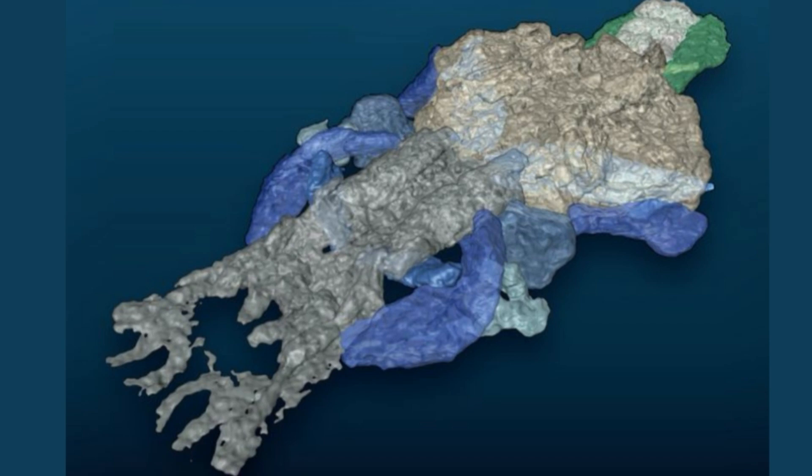Tetrapodomorphs usually have these features, and other animals contemporaneous with our strange little fish also had them. Paleospondylus seems to resemble a juvenile tetrapodomorph, one that hasn't developed all its adult features.